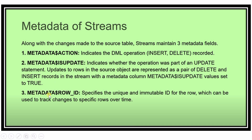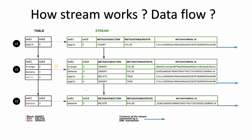METADATA$ROW_ID stores a unique and immutable ID for the row, which can be used to track changes to specific rows over time. To summarize: METADATA$ACTION stores INSERT or DELETE; METADATA$ISUPDATE stores a boolean — TRUE if an update occurred, FALSE otherwise; and METADATA$ROW_ID stores the row identifier.